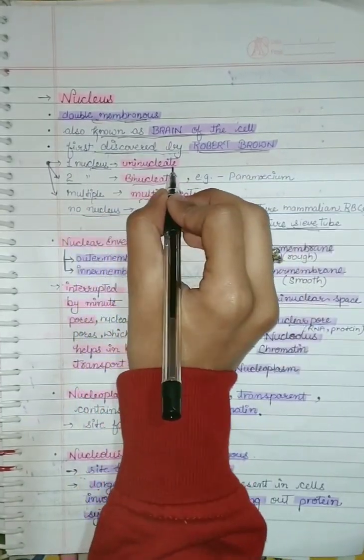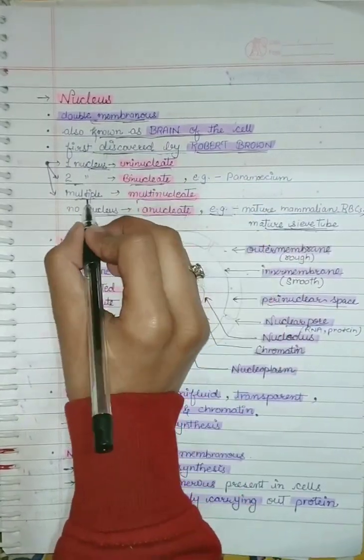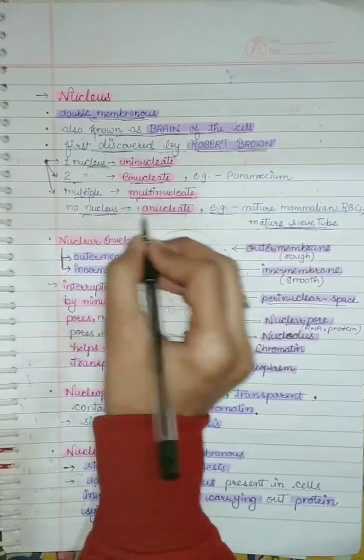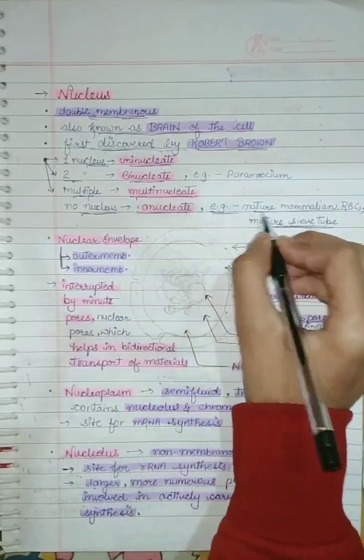If a cell has one nucleus it is known as uninucleate. If two, it is binucleate. If many nuclei are present in a cell it is known as multinucleate. And if there is no nucleus it is known as anucleate. Examples are mature mammalian RBC and mature sieve tube that is phloem.